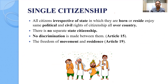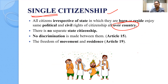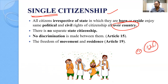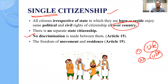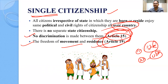The concept of single citizenship: all citizens, irrespective of the state in which they are born or reside, enjoy the same political and civil rights throughout the country. Single citizenship means no person can be a citizen of a state — every person is a citizen of the country, that is India. In the USA there is dual citizenship — one to the state they belong to and one to the United States of America. In India, whether from Haryana or Rajasthan, everyone is collectively a citizen of India only. Articles 15 and 19 (freedom of movement and residence) support this concept of single citizenship.